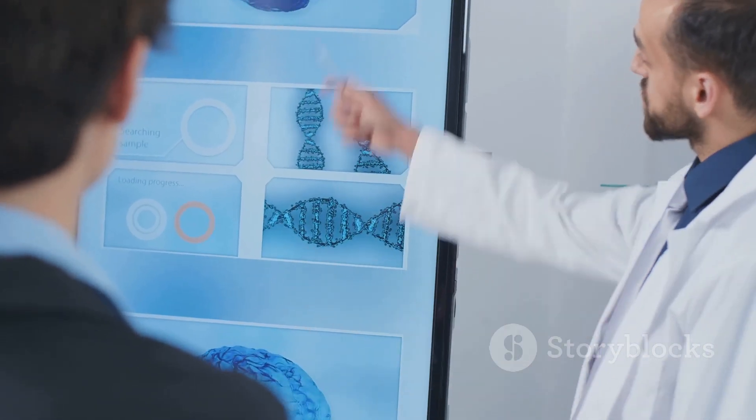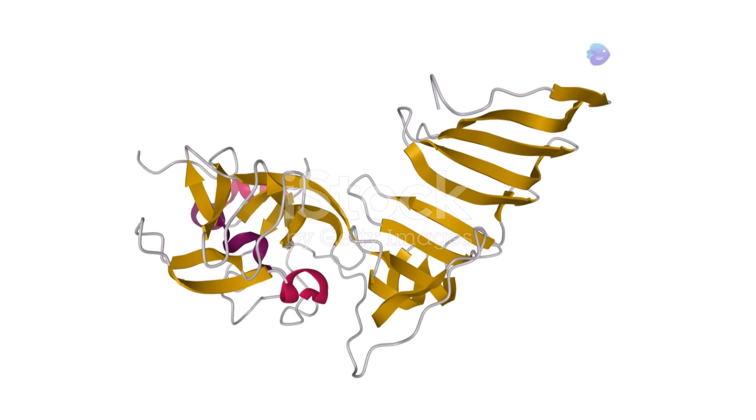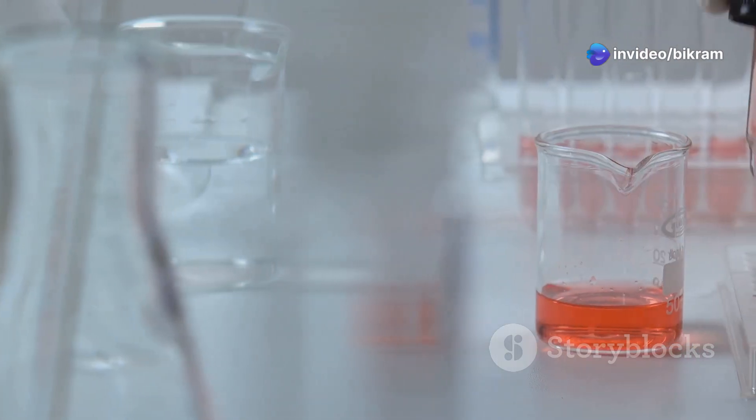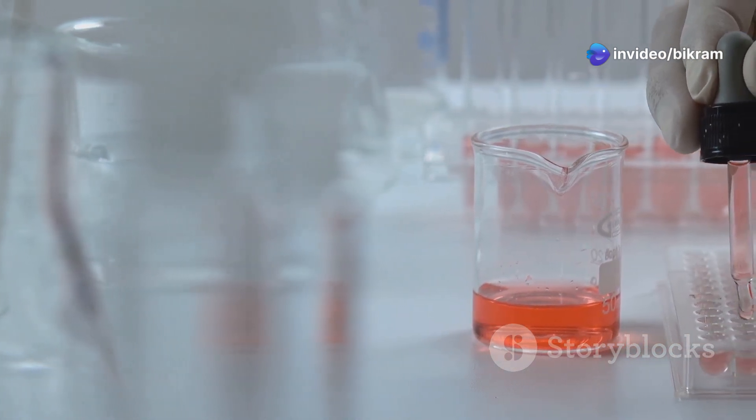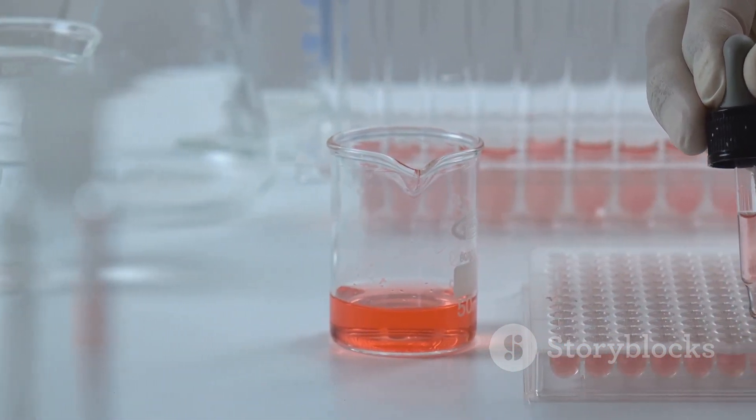Think of RISC as a guided missile, with the siRNA acting as the targeting system. At the heart of RISC is a key protein called Argonaute. Argonaute possesses a unique structure that allows it to bind to siRNA and unwind its double-stranded structure, separating the two strands.